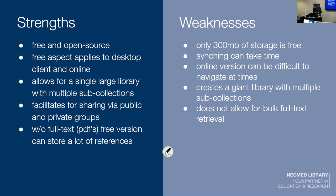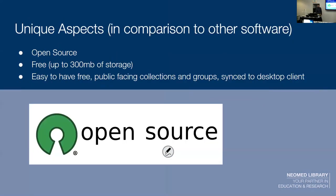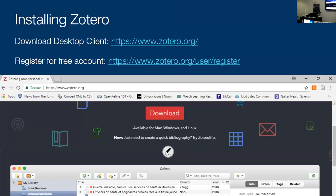Recently, Zotero has started showing you when articles are retracted — which is not always readily seen on the journal publication pages. It'll show a red retracted mark at the bottom of your collection and automatically pulls that information. That's more on open source — I'll send these slides out later.